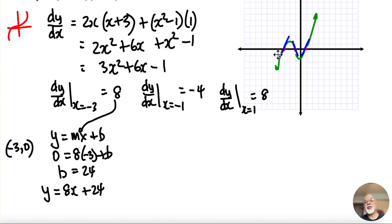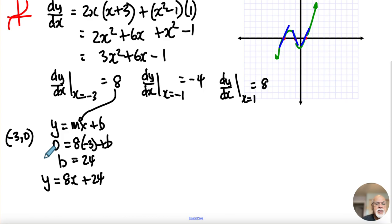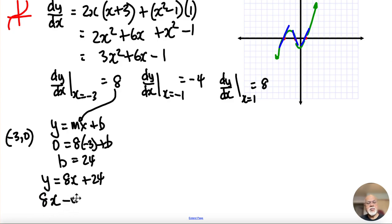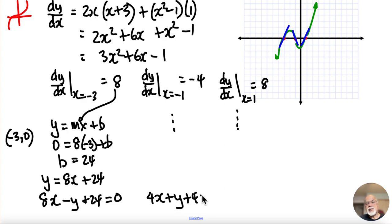In standard form, that first tangent line is 8x minus y plus 24 equals 0. You can do the others on your own; you should get 4x plus y plus 4 equals 0, and 8x minus y minus 8 equals 0. You might want to try those on your own just to make sure you're getting the right answers.